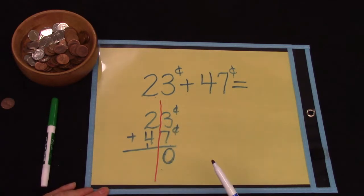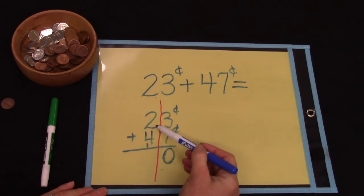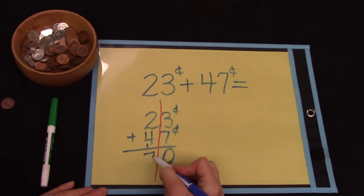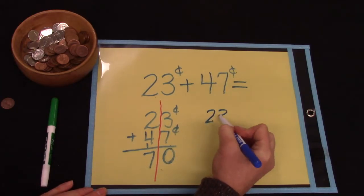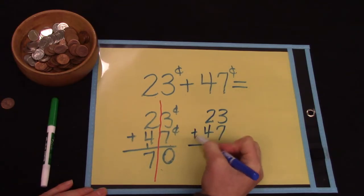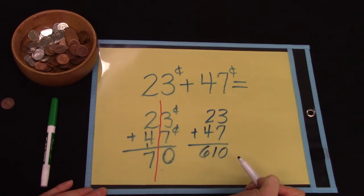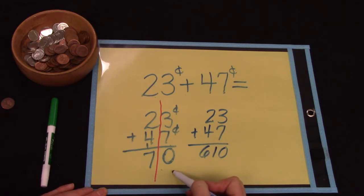Some people put it on top and that's fine. Now we have 2 plus 4 which is 6 plus 1 which is 7. If we had tried to put 10 here, look at what our answer would have been. It would have been a crazy answer. 3 plus 7 is 10 and 2 plus 4 is 6. There's a pretty big difference between 610 and 70 isn't there?